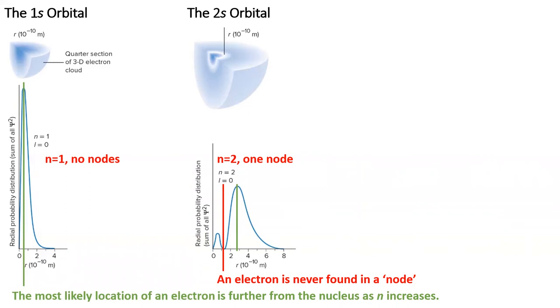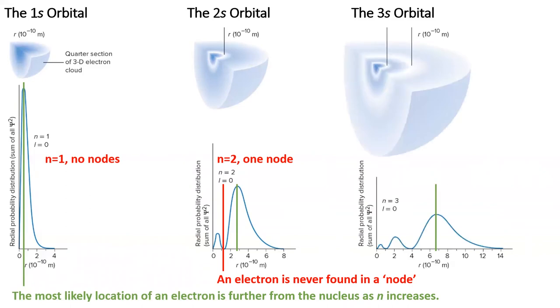Moving on to the 3s orbital, we see that it's even bigger than the 1s and the 2s orbitals, and that the most likely location of an electron is even further from the nucleus. The 3s orbital has two nodes. In fact, as we increase the value of n, we see an increase in the number of nodes for all orbitals, not just the s orbitals. The 4s orbital will have three nodes. The 4p orbital will have three nodes as well.